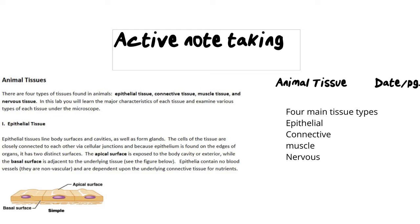Now as the lesson progresses, we need to be comfortable with adding as many notes as possible. And these can be things like bullet points where you have a few little sentences jotted down or it can be key words. So if we moved into the next paragraph, for example, the teacher now is describing epithelial tissue and they go on to say things like the epithelial tissue lines body surfaces and cavities as well as it forms glands. The cells of the tissues are closely connected to each other via cellular junctions and because epithelium is found on the edges of organs, it also has two distinct surfaces.